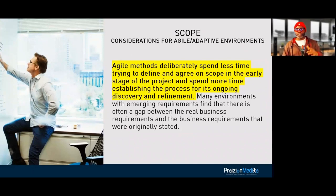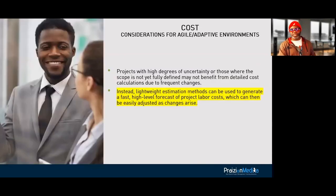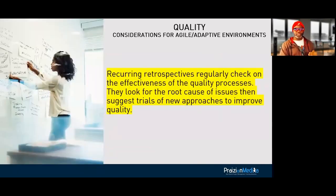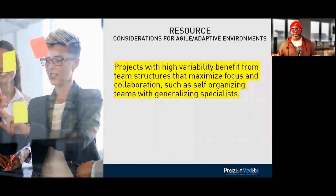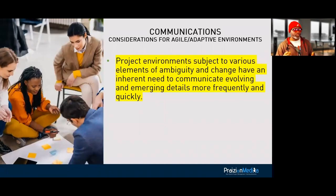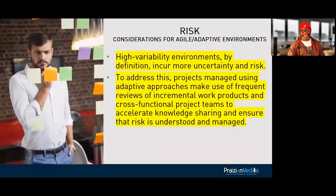We do lightweight scheduling and lightweight costing. Quality is about having regular retrospectives and regular checks on effectiveness. Resource management: we don't call people resources in the world of Agile — that's a big no-no. A project with high variability benefits from team structures with collaboration, flexibility, and T-shaped skills. Communications: we use information radiators and osmotic communication. Risk is not negated in Agile — a lot of teams use risk registers. There's a difference between a risk and an impediment: a risk is an impediment waiting to happen.